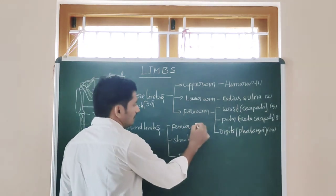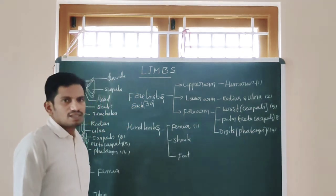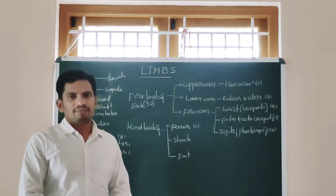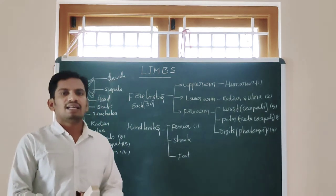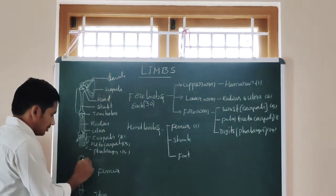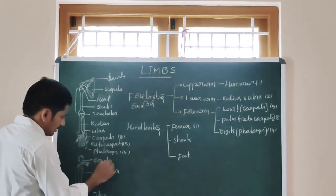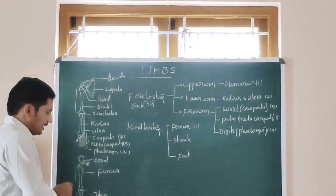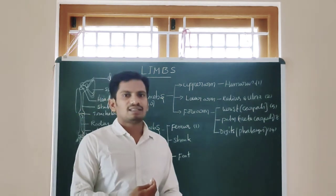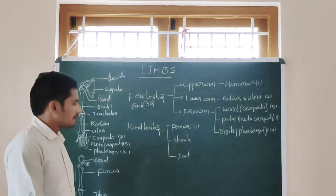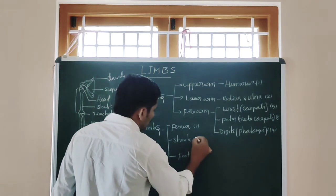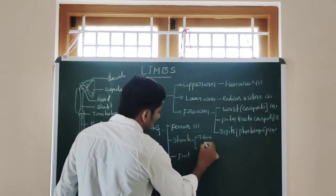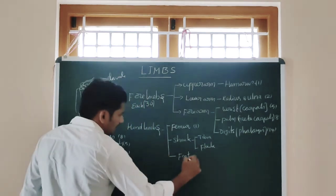Femur has only one bone which is the longest bone. It joints with the pelvic region. The pelvic region has the coxal bones. These are the coxal bones. The head of the femur attaches with the acetabulum joint. And here shank bones are two: tibia and fibula.